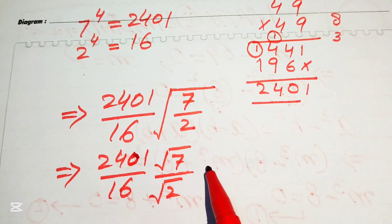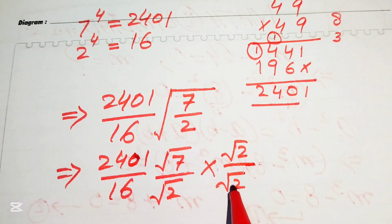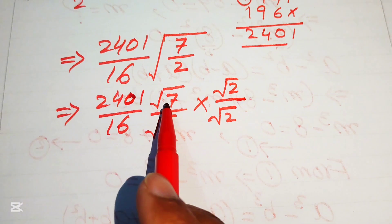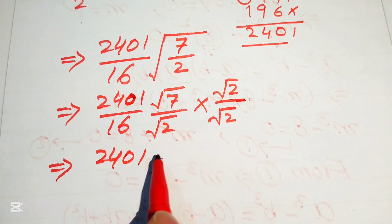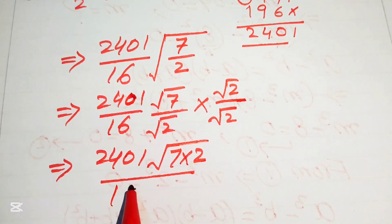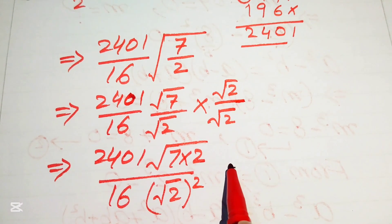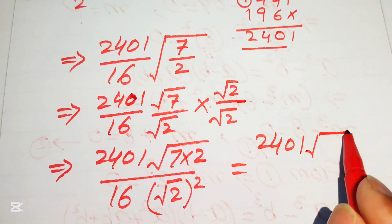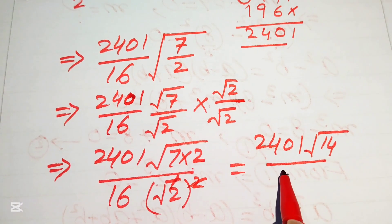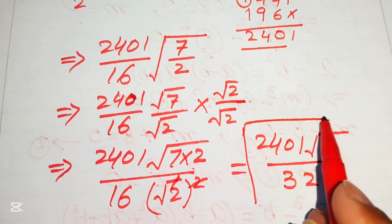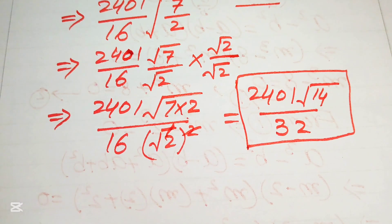We need more simplification, so we break the square root sign and write it as square root of 7 divided by square root of 2. We rationalize by multiplying and dividing by square root of 2, combining to get the square root of 14 in the numerator. Square root of 2 times square root of 2 gives 2, and 16 times 2 becomes 32. So the final simplified form is 2401 times square root of 14 divided by 32. Thank you for watching — please subscribe to my channel for more videos.